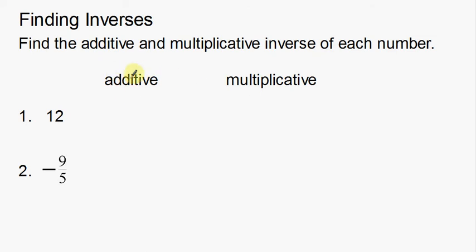Notice I have them kind of categorized. Here's additive and here's multiplicative. So I have these two numbers, 12 and negative nine-fifths. We'll start with the 12. Now, this is kind of vocabulary here, a lot of vocabulary.